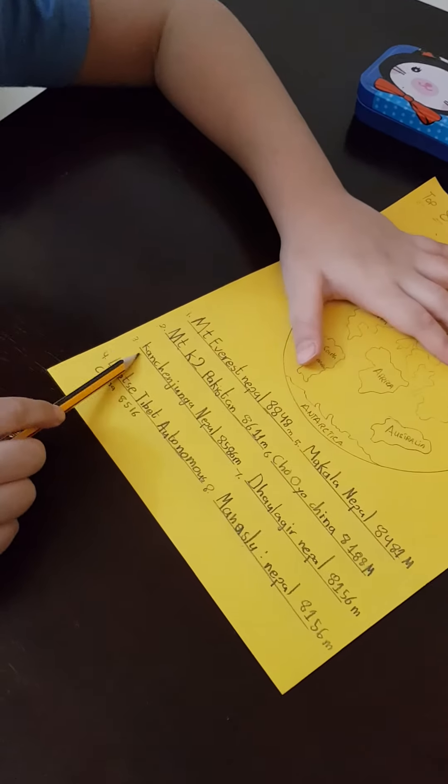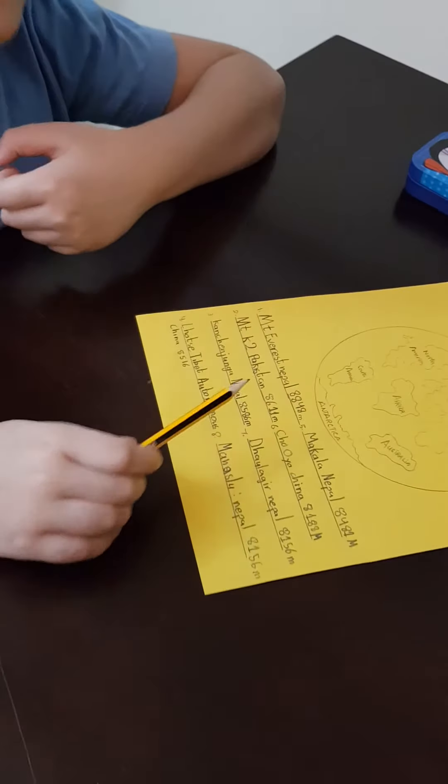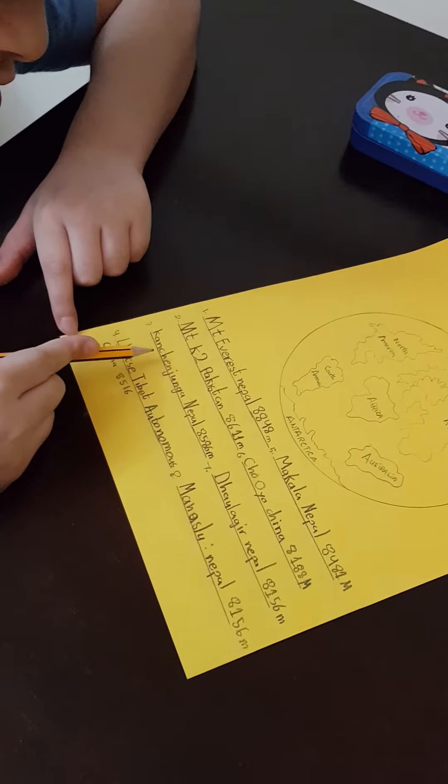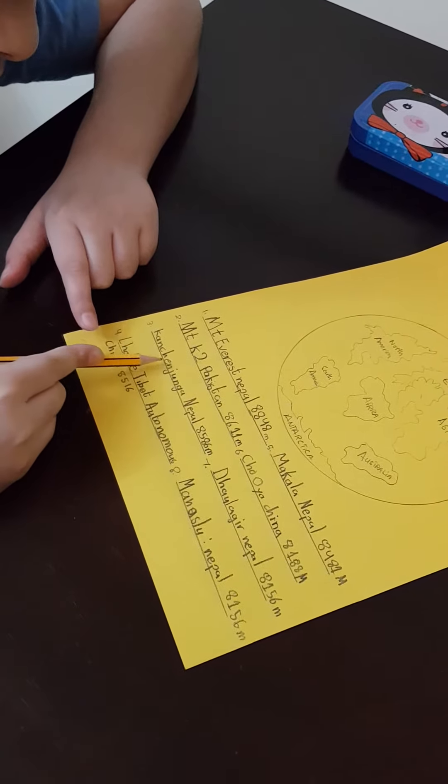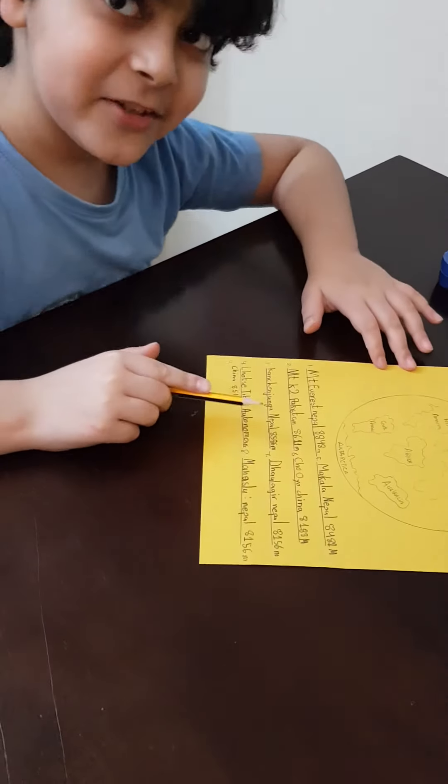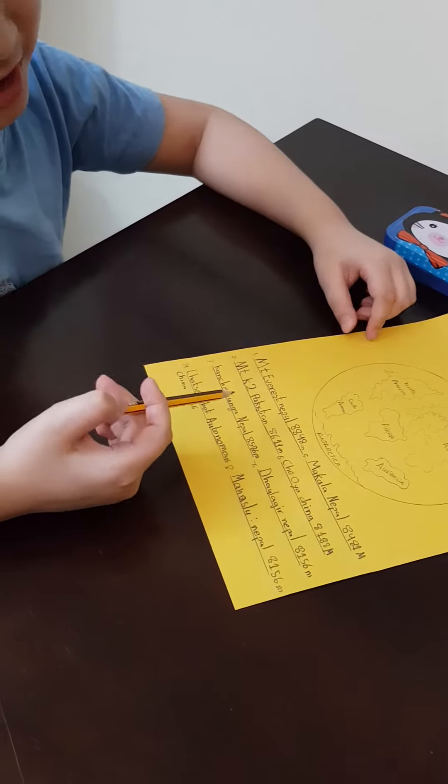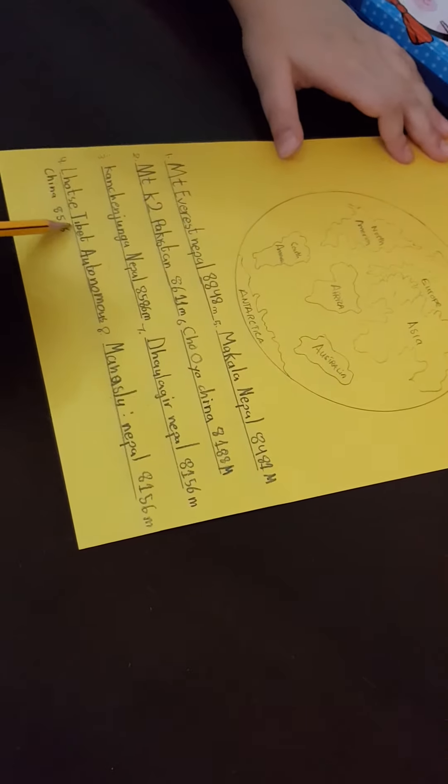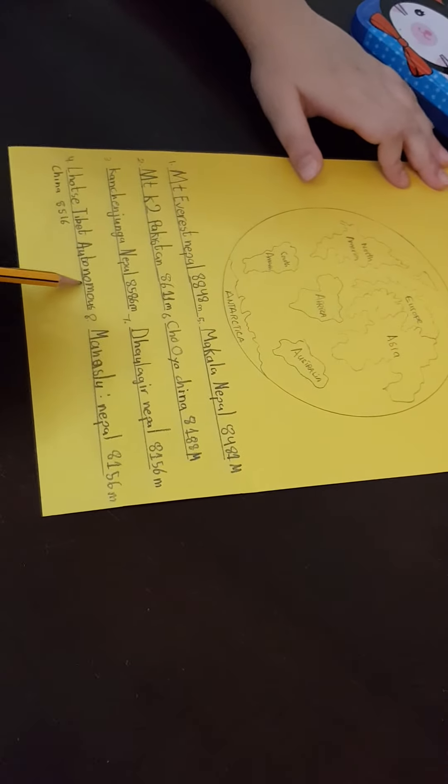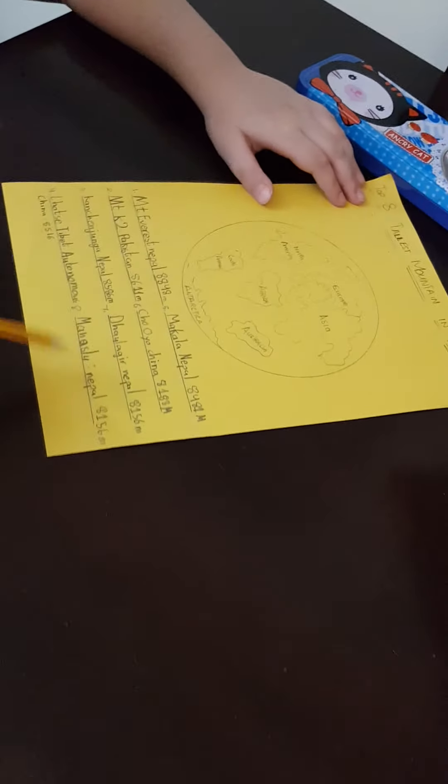So let's go to this one. This is a really hard spelling. It's a bit hard and I don't know that much but I tried my best because it's a very long word. Then this is Lhotse, Tibet, Autonomous in China. It's 8,516 meters long.